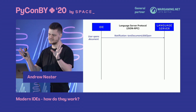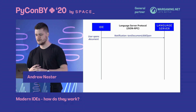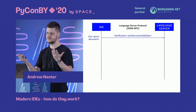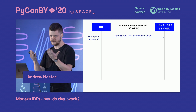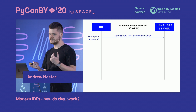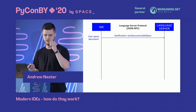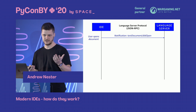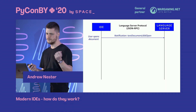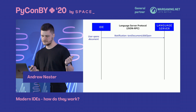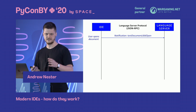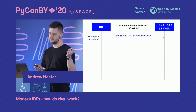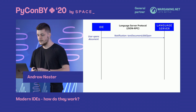Let's look at how the protocol actually works in a simplified way. We have two parties: the IDE and the language server. Between them, the protocol is defined. They communicate using JSON-RPC — an open standard for making remote procedure calls using JSON, very widely used.